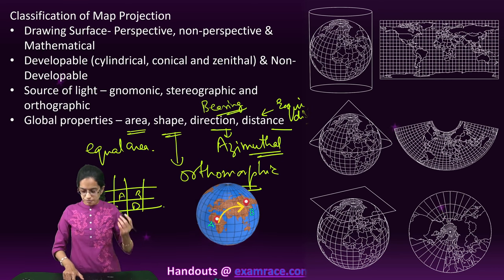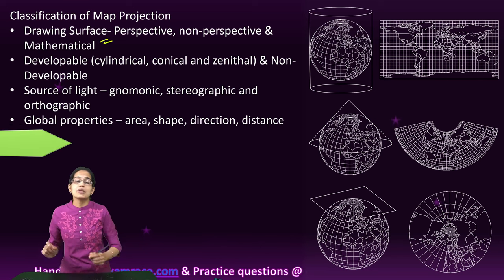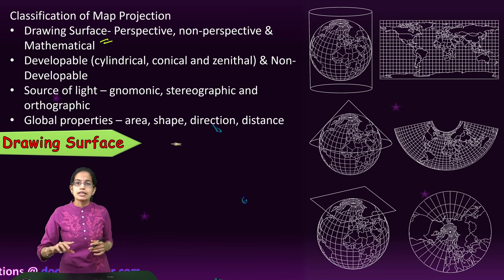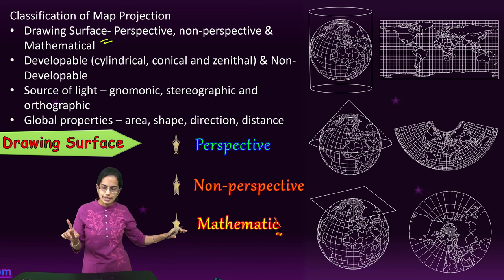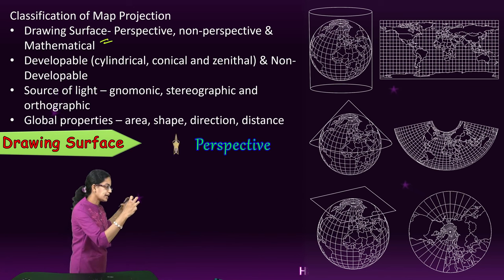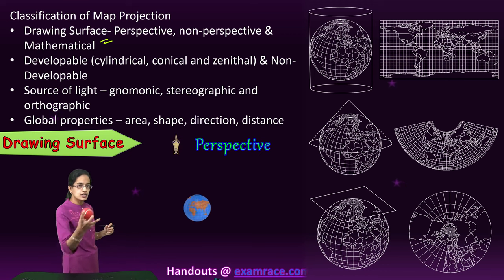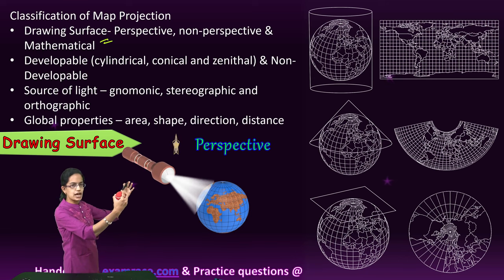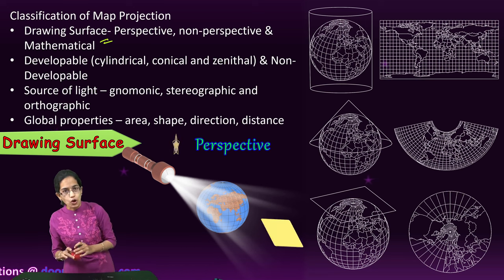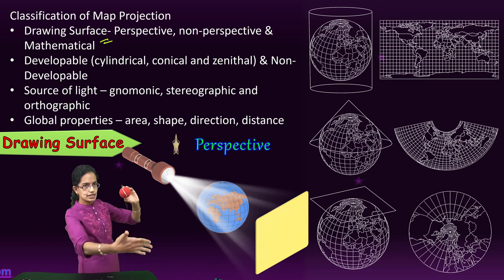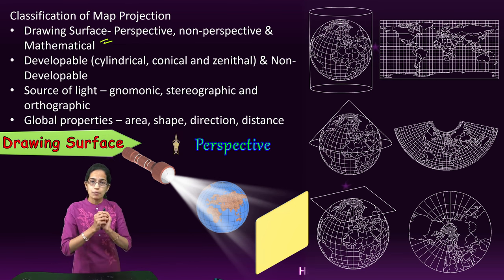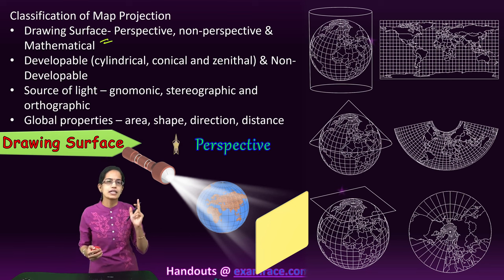The distance from point A to B in an equidistant scenario would be maintained and remain the same whether in the north hemisphere, south hemisphere, or the region of the equator. Coming on to the next classification: based on the drawing surface, the projection can be perspective, non-perspective, or mathematical.